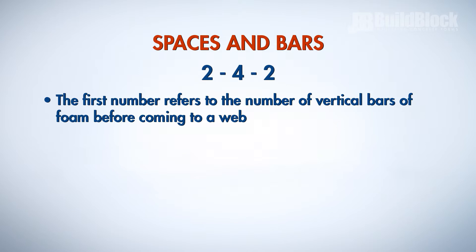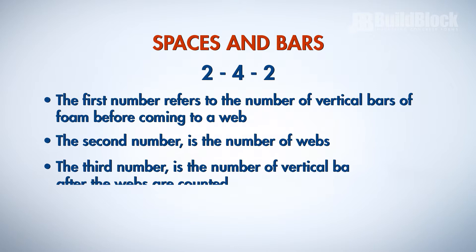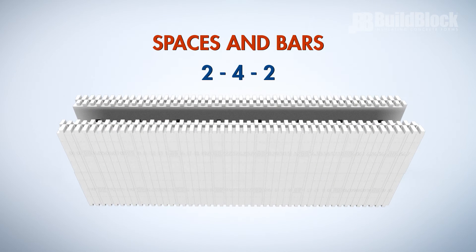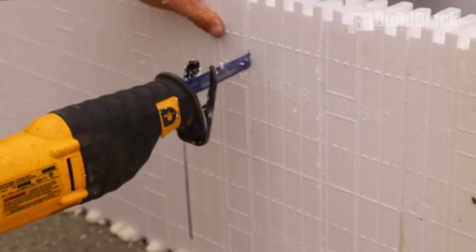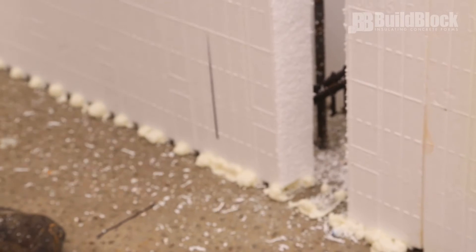The first number refers to the number of vertical bars of foam before coming to a web. So for example, our 2-4-2 block would look like this. The first two means that there are two vertical bars of foam before hitting a web. When using BuildBlock ICFs, these vertical bars are each one inch of foam. The one inch repeating pattern and integrated cut lines and tape measure also make it very easy to cut correctly.